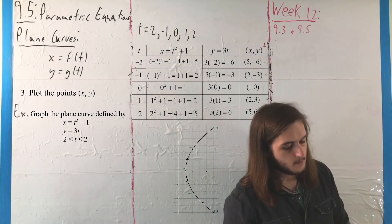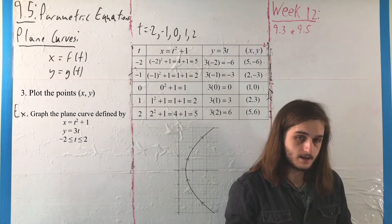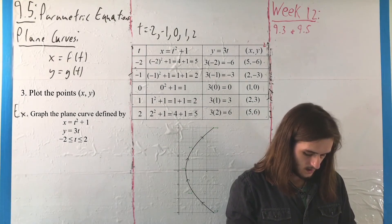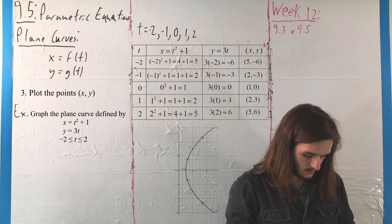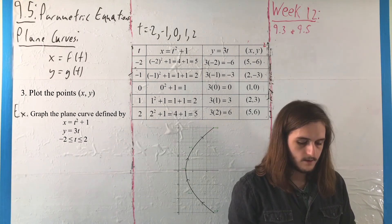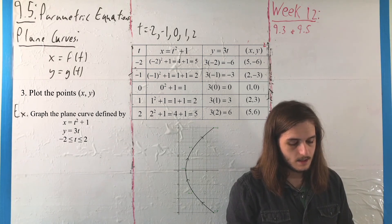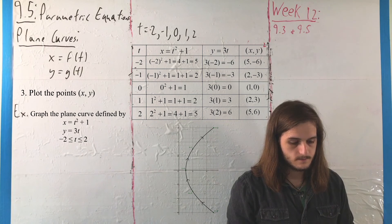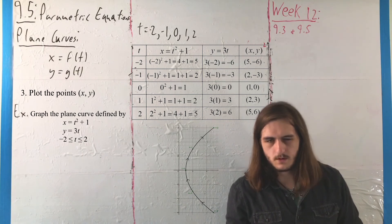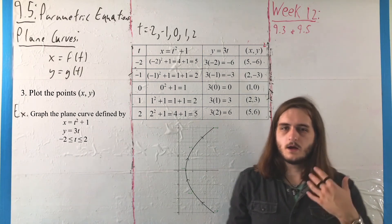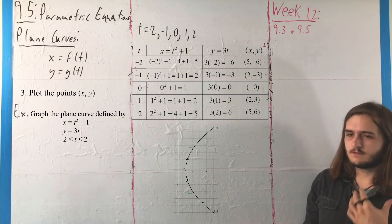It is going from the point (5, -6) all the way around to the point (5, 6) at t equals 2. So it's important to be mindful and careful about what's going on in terms of that motion.